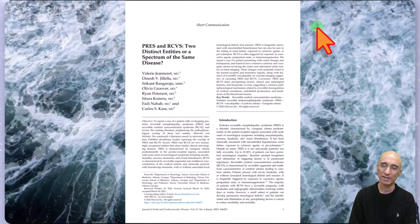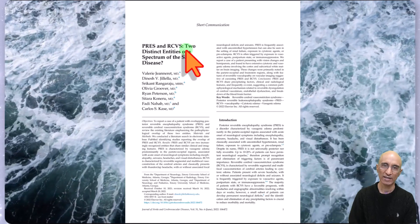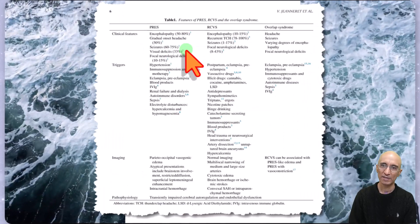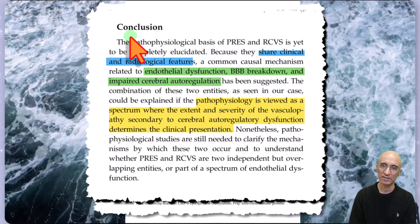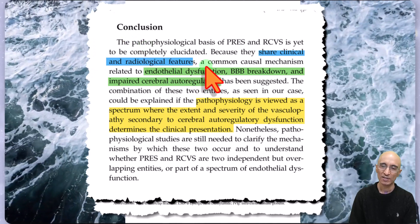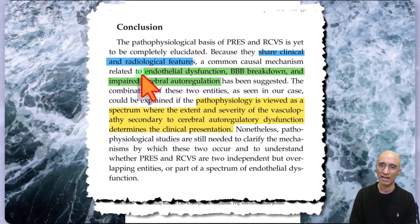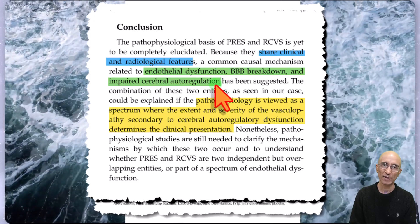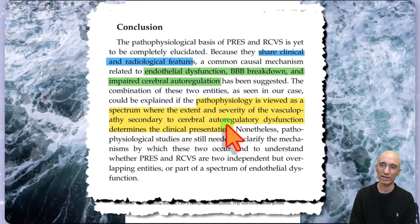This overlap has been well documented in the literature, where the question is whether it is PRES, RCVS, or some kind of overlap syndrome. This is not surprising because there are shared clinical and radiological features in both PRES and RCVS. The pathophysiology of both conditions is suspected to be related to endothelial dysfunction, breakdown of the blood-brain barrier, and impaired cerebral autoregulation in the setting of hypertension, suggesting that PRES and RCVS fall under the same spectrum of cerebral autoregulatory dysfunction.